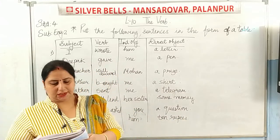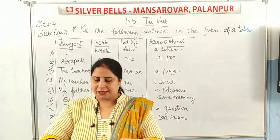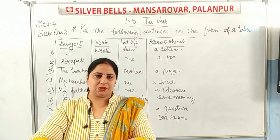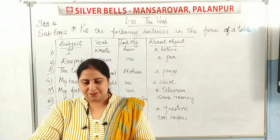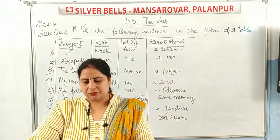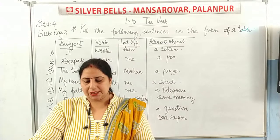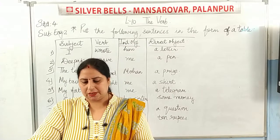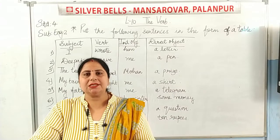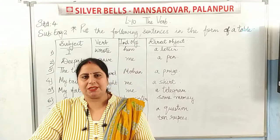Next: 'Jenny bought her mother some sweets.' Jenny is the subject, bought is the verb, her mother is the indirect object, and some sweets is the direct object.